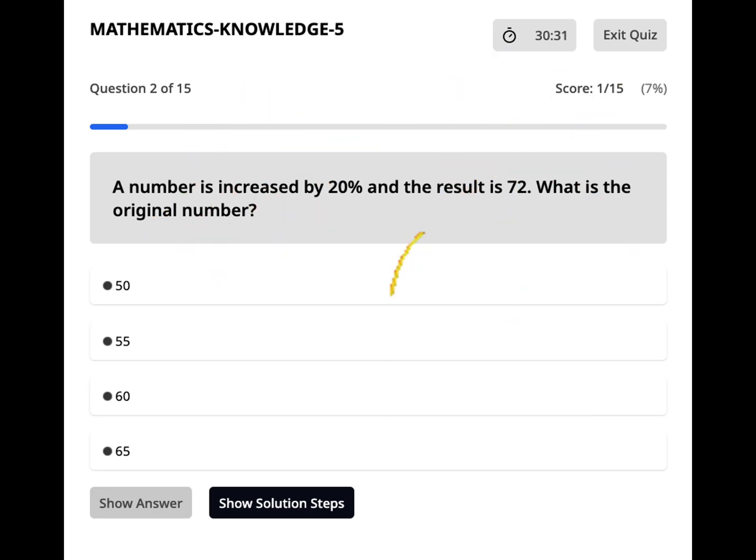All right, question two on the ASVAB mathematics knowledge. A number is increased by 20% and the result is 72. What is the original number?